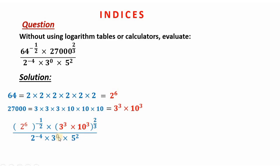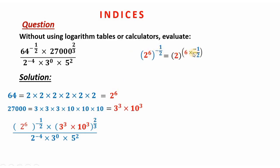To simplify the numerator — the denominator is already in its simplest form, so most of the work is on the numerator. For the first part, 2 power 6 raised to power negative one half can be simplified by applying the laws of indices: 6 multiplied by negative one half gives us 2 to the power negative 3.